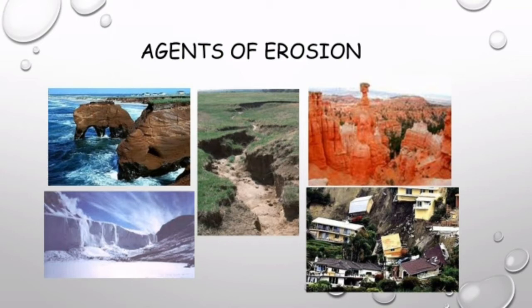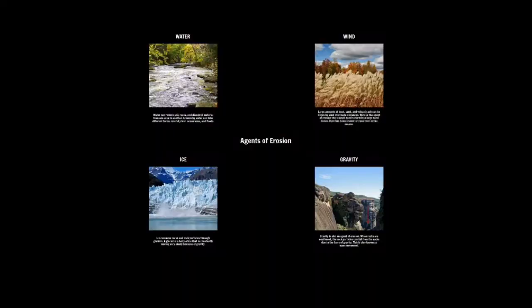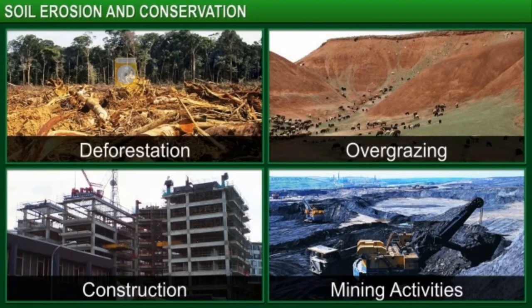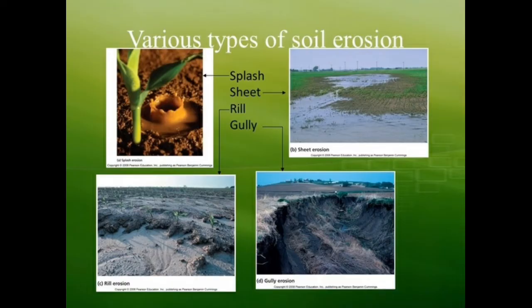Loose and fragile soil easily wears away by agents of erosion. The slope of the land determines the force of action — erosion agents act vigorously on steep slopes, whereas they are less destructive on flat land. The roots of plants bind the soil, whereas bare lands easily wear away by the action of rainwater and running water. The removal of vegetation, overgrazing by animals, and faulty methods of cultivation are also responsible for soil erosion.